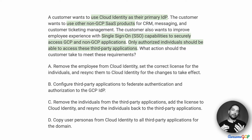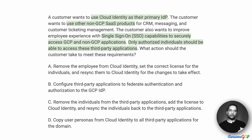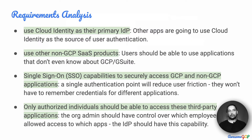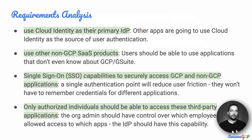In this case, you are providing a solution to a customer and they have certain requirements. The requirements are: first, they have to use Cloud Identity, and we want to use that to solution a requirement where they can access other applications used by people in the company using that single identity provider. So if you consider the requirements analysis, Cloud Identity as a primary IDP is a requirement, meaning other apps are going to use Cloud Identity as the source of user authentication.